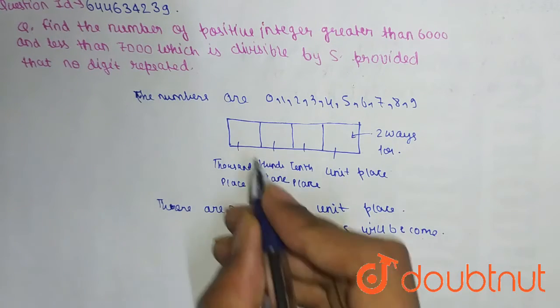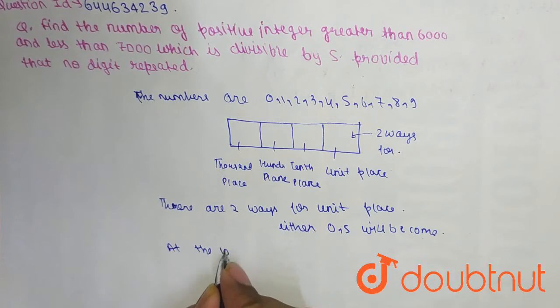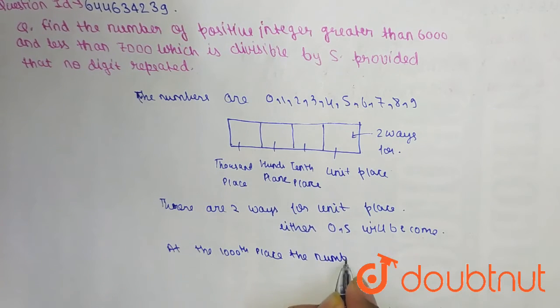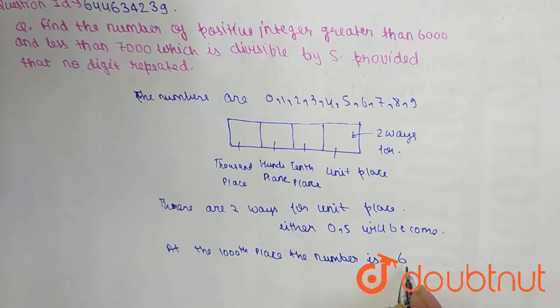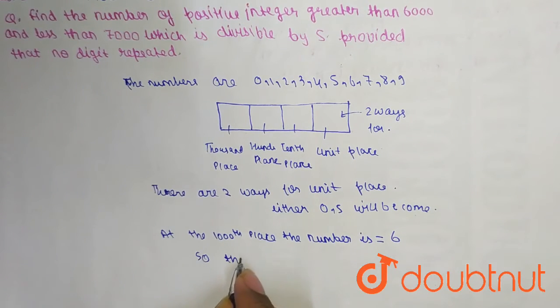So at the thousand place, the number is equal to 6. So the remaining numbers...